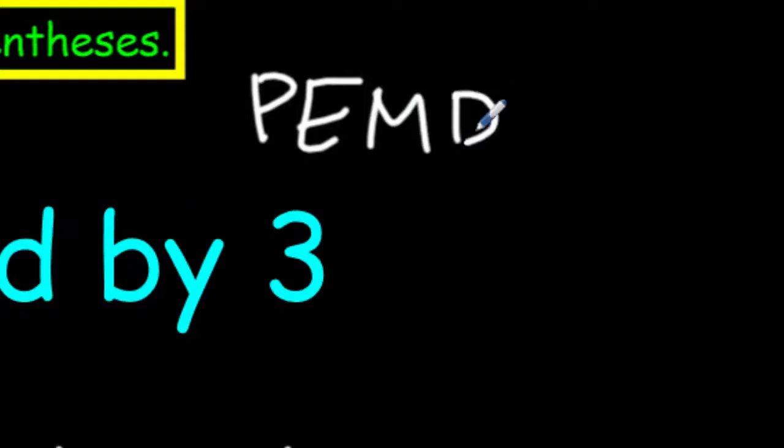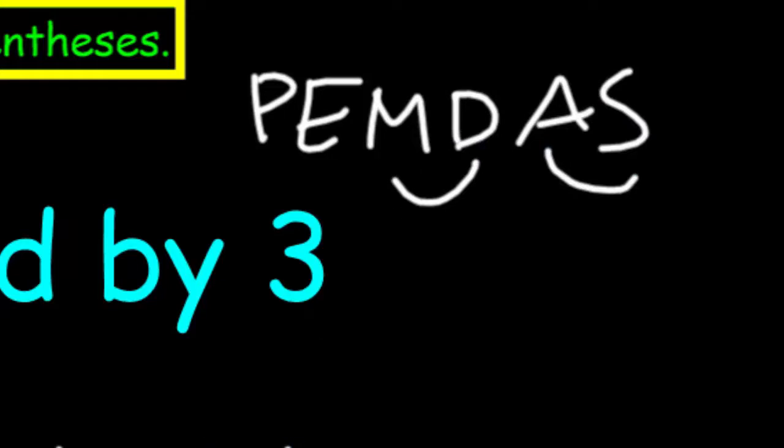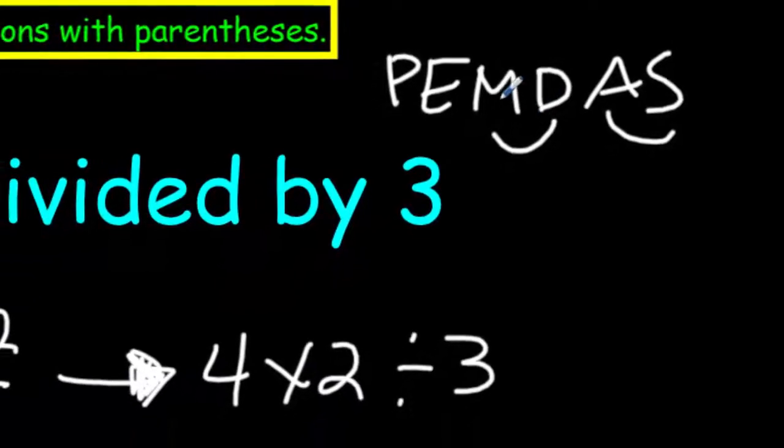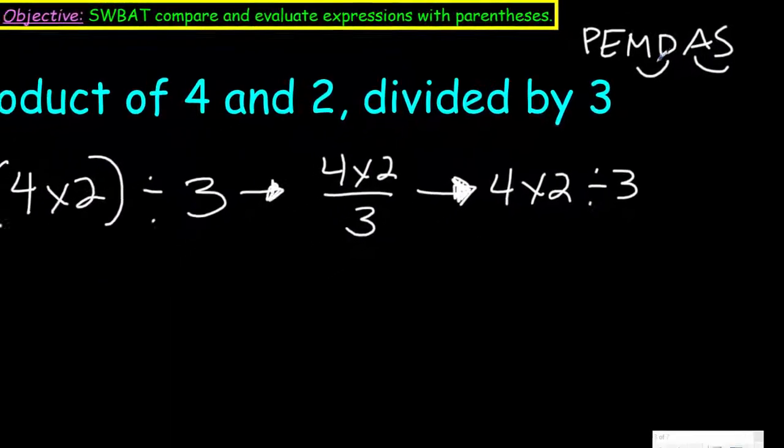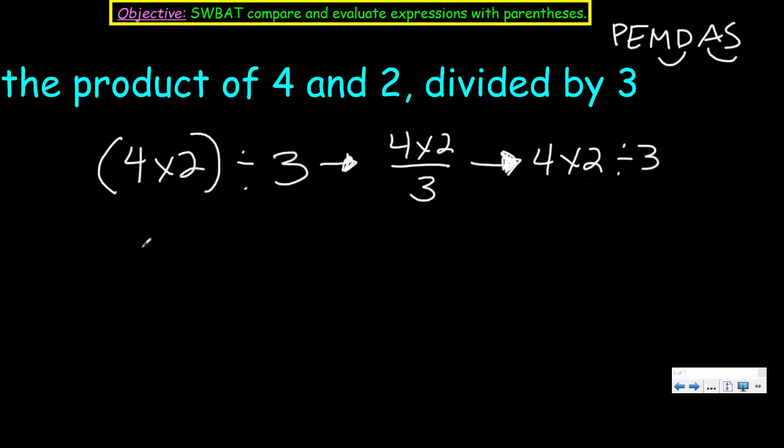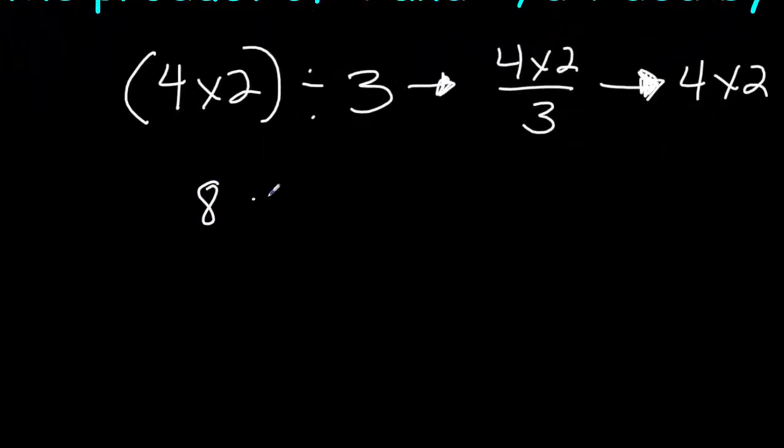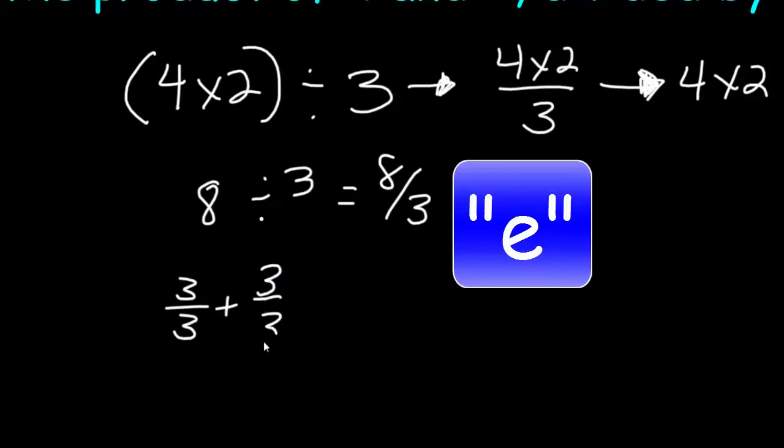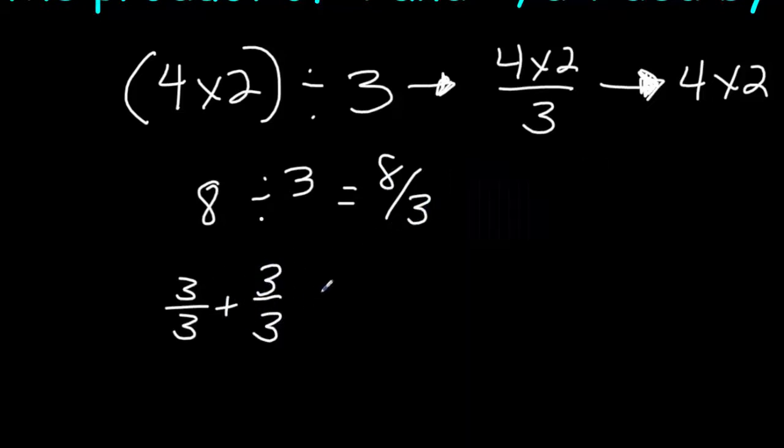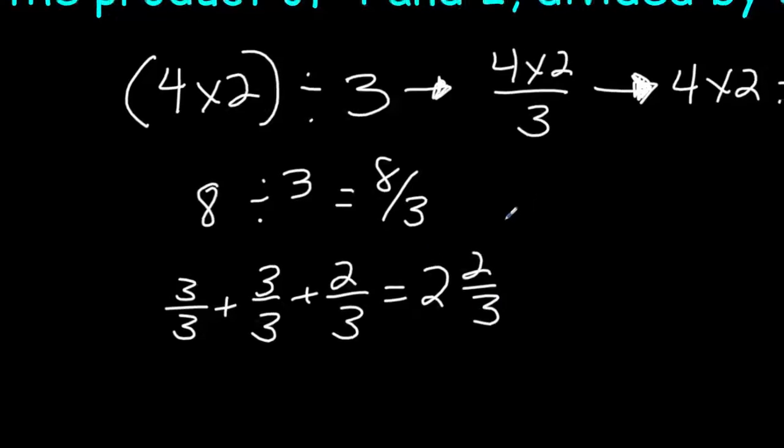We could also write it as four times two divided by three. And the reason why we can write that, because PEMDAS tells us when we do parenthesis, exponents, multiply, divide, add, and subtract. Well, technically, these two guys are tied. So, it doesn't matter whether division comes first or multiplication comes first, we do this operation in the order that they come in. Let's go ahead and evaluate this expression. Four times two is going to be eight, and then eight divided by three, which is a fraction greater than one, also an improper fraction. What I would write that as is two and two-thirds.